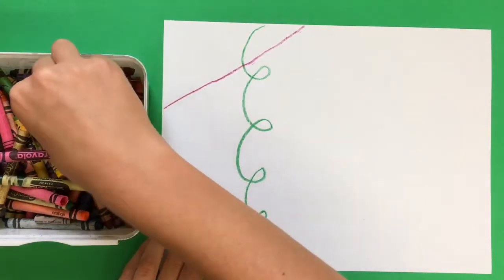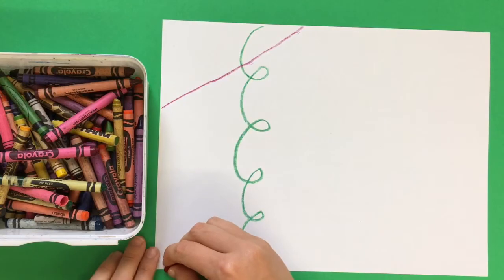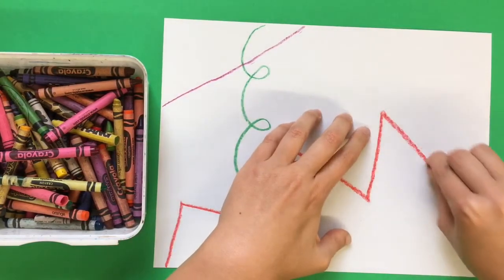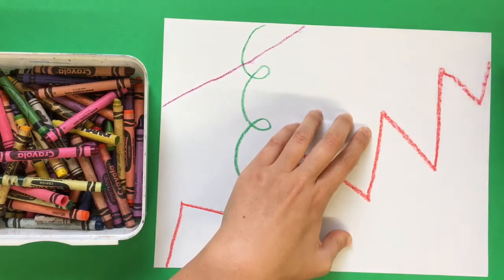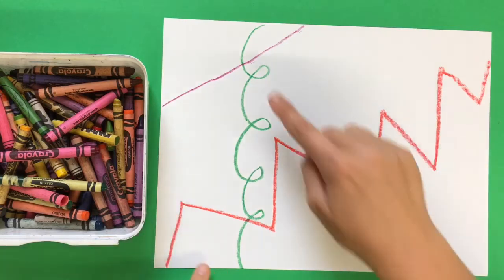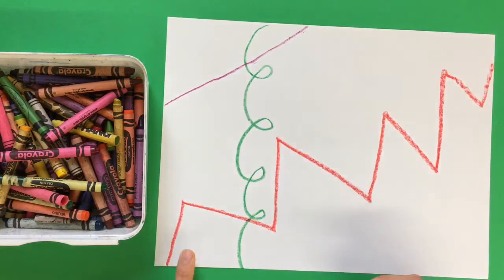I could even draw a zigzag line that goes from this side all the way over to this side. So even though everyone is going to be hearing the same idea, your lines and shapes can look very different from one another's.